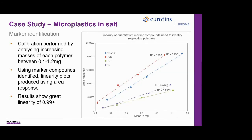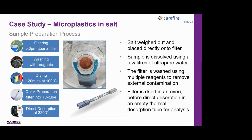So how is this applicable to salt? The sample preparation process is similar to that used in our published application note for bottled drinks. A salt sample is weighed out and placed on top of a quartz filter, seen in the image at the centre of the slide. The filter is then washed with a few litres of ultra-pure water to dissolve the salt, collecting the residue on the filter. This is then washed using hydrogen peroxide, acetone, and methanol to remove external contaminants, before the filter is dried for 2 hours at 100 degrees in a glass dish. The filter is then placed inside an empty thermal desorption tube and analysed within the TD-GCMS system using direct desorption at 320 degrees. This sample preparation process is straightforward, typically takes less than an hour, and can be applied to filters used for a wide range of sample types.